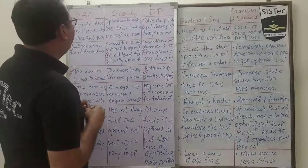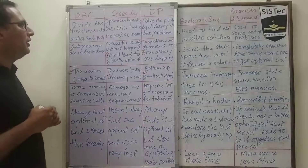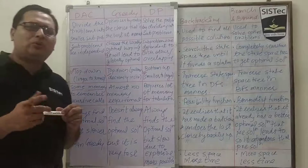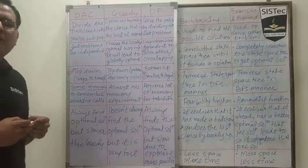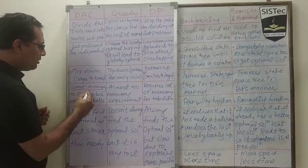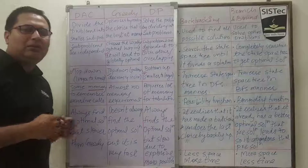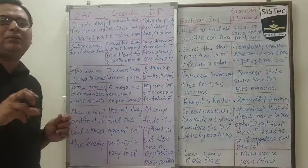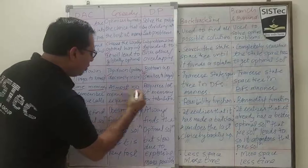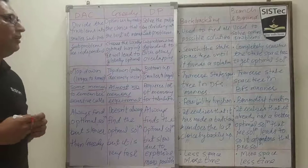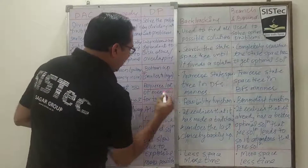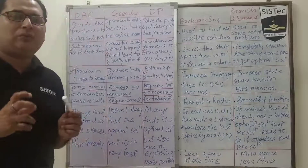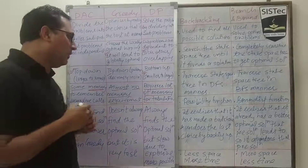Now the important point regarding memory requirements for divide and conquer, greedy and dynamic programming. In divide and conquer, it requires some memory because in most cases we use recursive calls, and to store those recursive calls we require memory. In greedy, we need not store previous decisions — we take one decision locally at a time which is the best in that particular situation, so almost no memory is required. Whereas in dynamic programming, we require a lot of memory because we need to store all previous decisions for comparison during optimization.